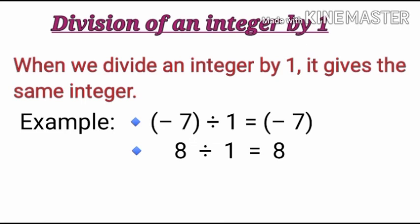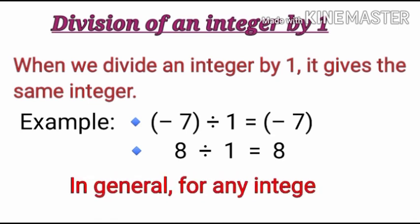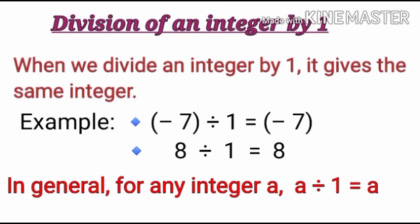So here in general we can say that for any integer a, a divided by 1 is equal to a. That means if we divide any integer by 1, the result will be that same integer. It will give the same integer.